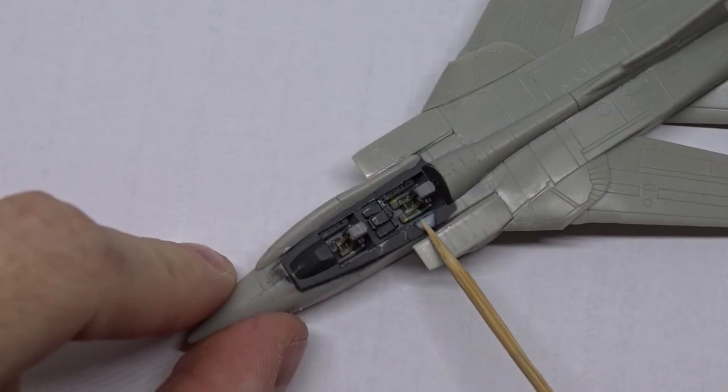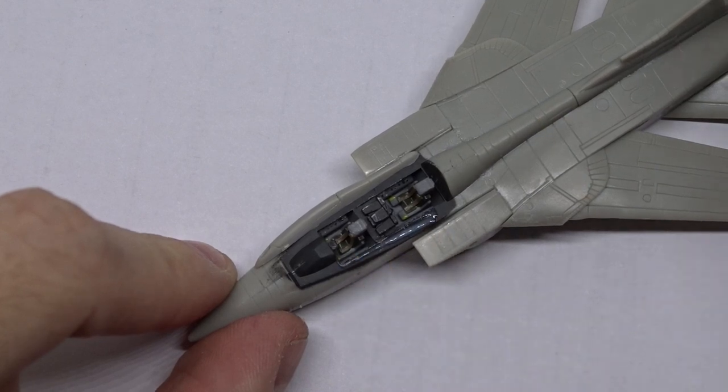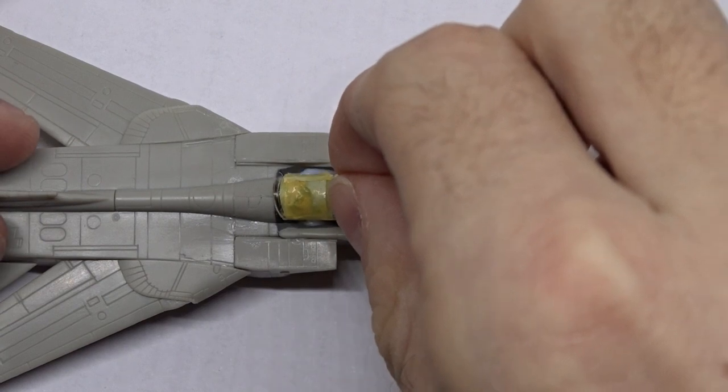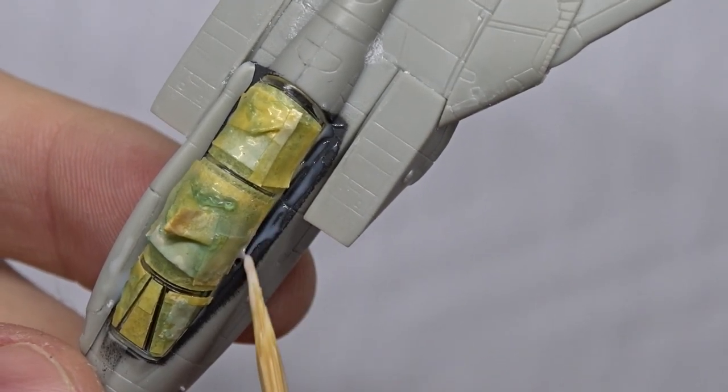To finally glue the canopy onto the model I use white glue. It dries clear so it wasn't a problem that I used a bit too much here. Don't use super glue or modeling glue because the canopy might fog up.